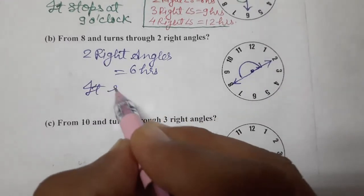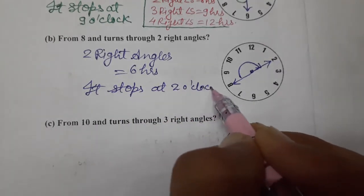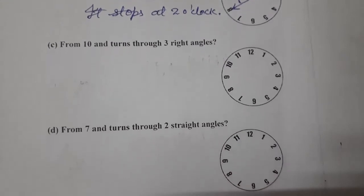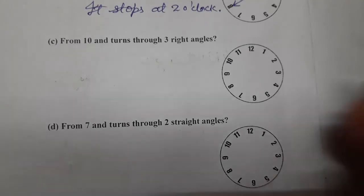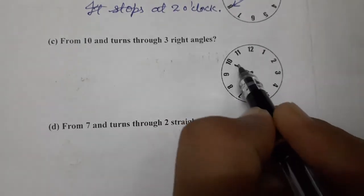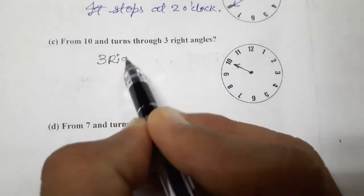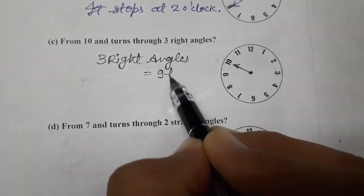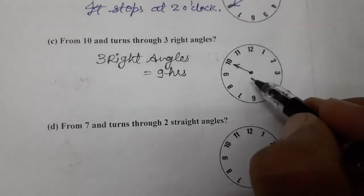Third one: starting from 10, turning through three right angles. Three right angles equals 9 hours. Moving 9 hours clockwise from 10: one, two, three, four, five, six, seven, eight, nine — we reach at 7. So it stops at 7 o'clock.